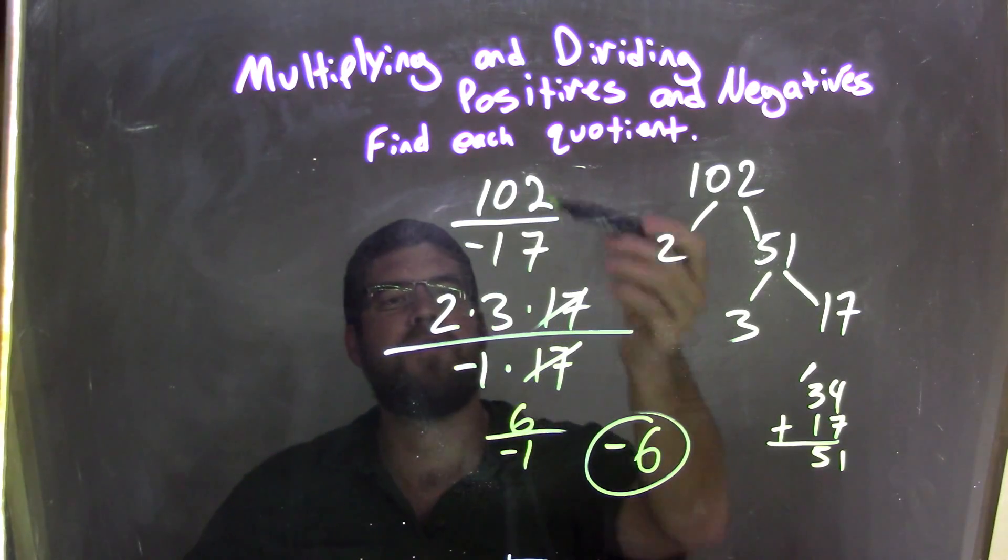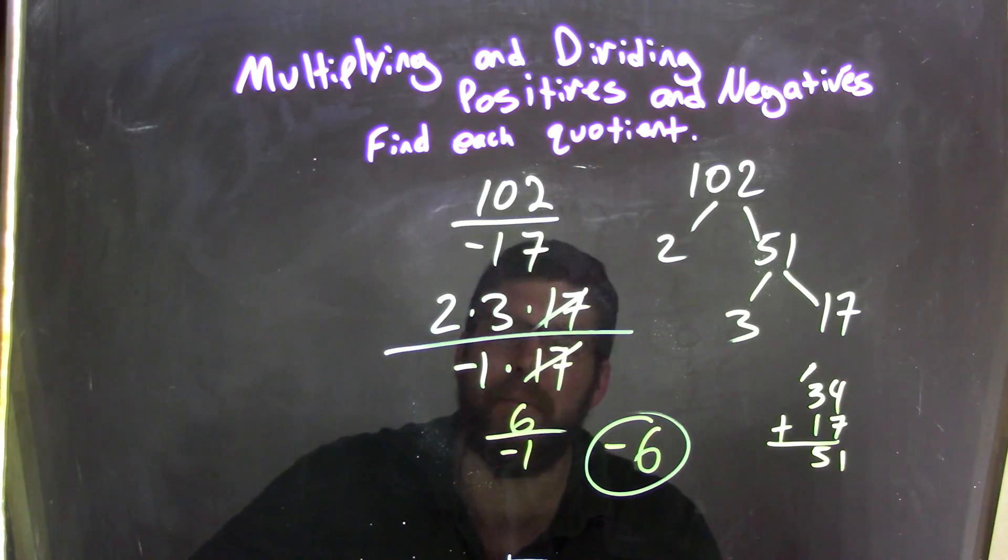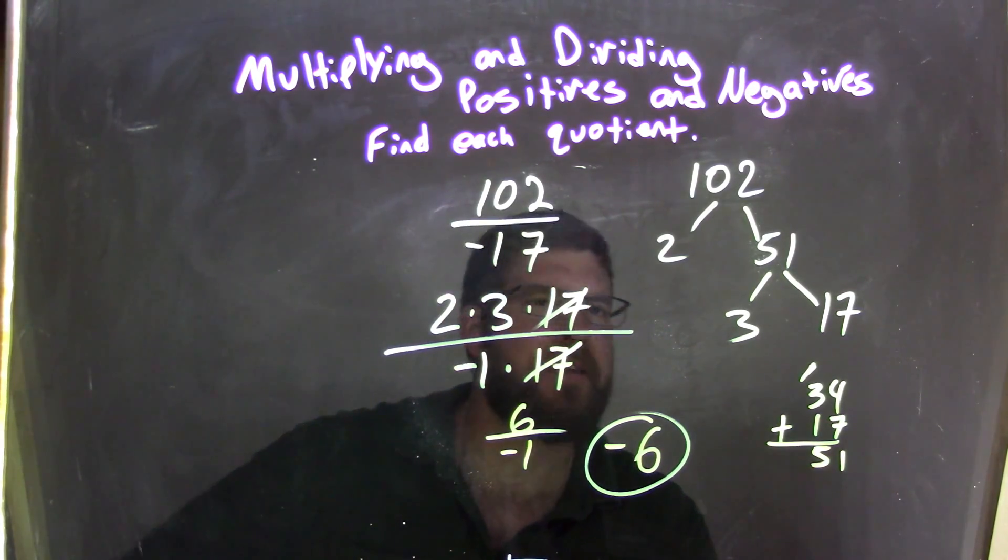So again, let's recap. We started with 102 divided by negative 17. The denominator, I knew I couldn't really break down the prime numbers, so I dealt with 102. See if I can break it down.